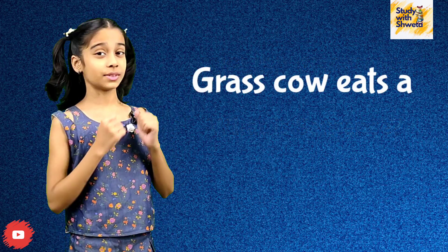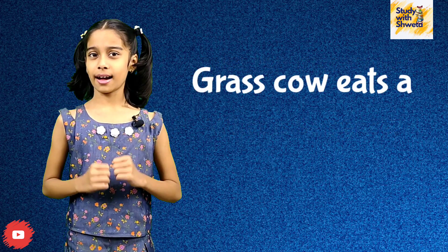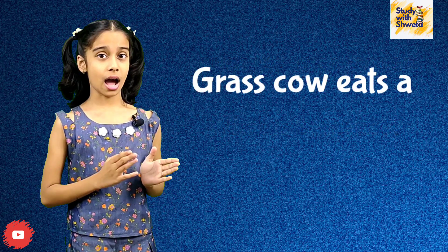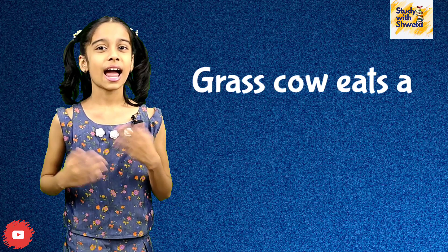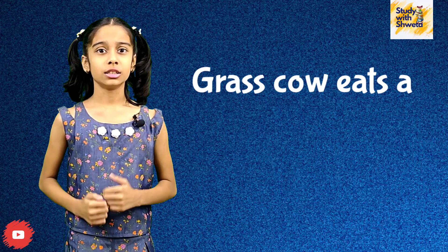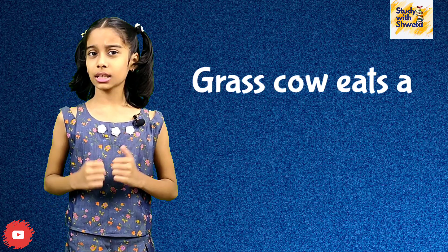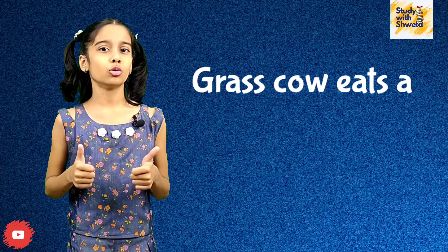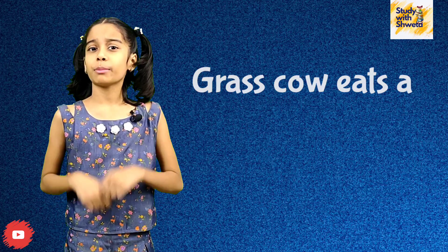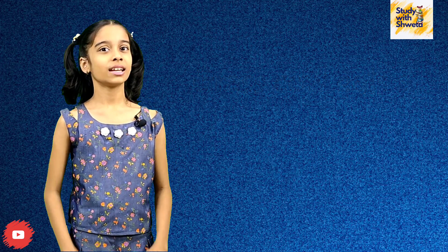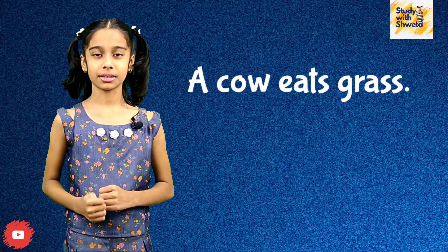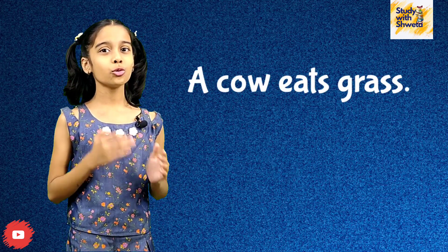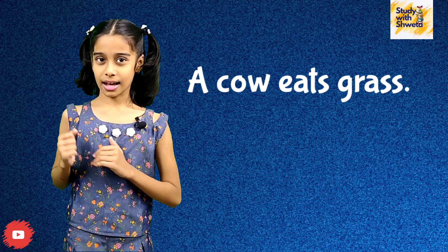Look at these words: grass, cow, eats, and a. Do they make sense? No, they do not make sense. Now read the same words in another order: A cow eats grass.